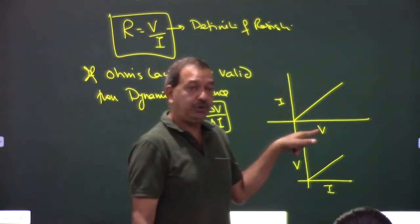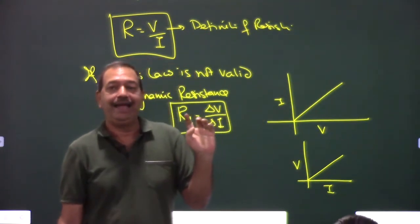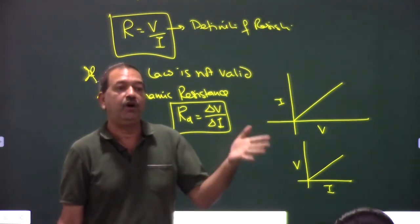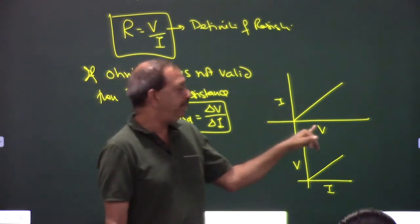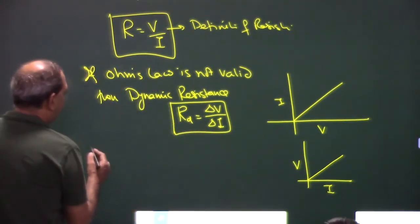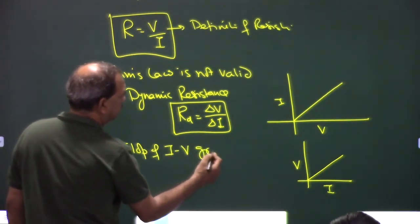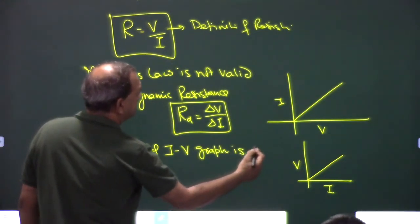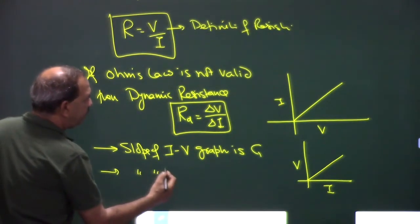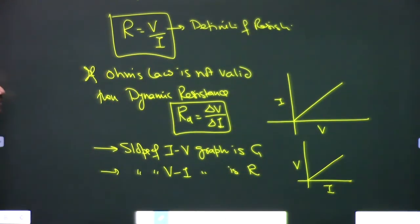In an I-V graph, I is proportional to V, and in a V-I graph, V is proportional to I. Generally, X is the independent variable and Y depends on X. So in an I-V graph, I depends on V, and in a V-I graph, V depends on I. The slope of an I-V graph is G (conductance), and the slope of a V-I graph is R (resistance).